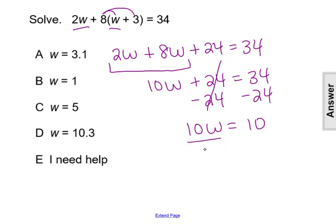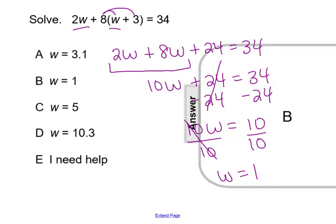And then to undo multiplying by that 10, we'll divide by 10 on both sides, leaving us with w equals 1. That's our solution, making our answer choice B.